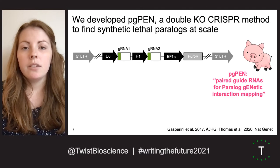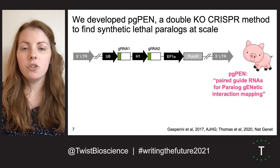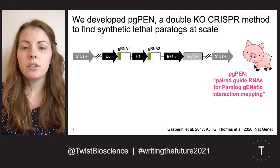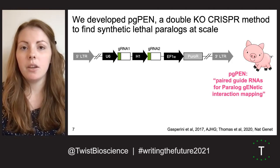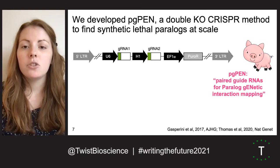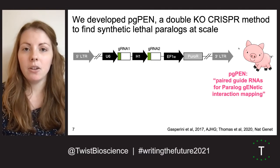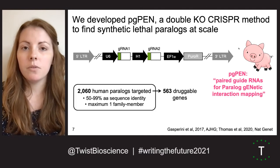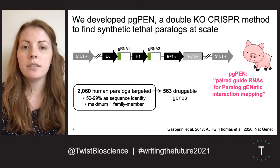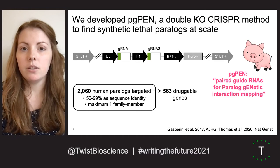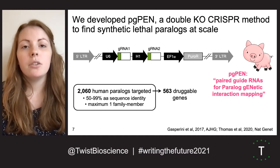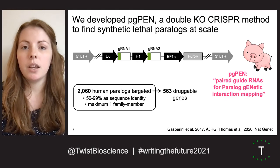To identify synthetic lethal human paralogs on a genome scale, we built on work from two other labs at the University of Washington to develop a double knockout CRISPR-Cas9 method that we called PIGPEN, which stands for Paired Guide RNAs for Paralog Genetic Interaction Mapping. PIGPEN targets just over 2,000 paralog genes, and over a quarter of these genes are classified as druggable. We used this library to do a CRISPR screen in two human cancer cell lines.